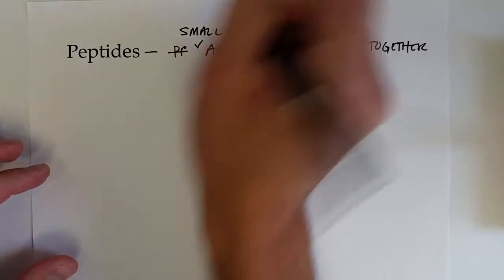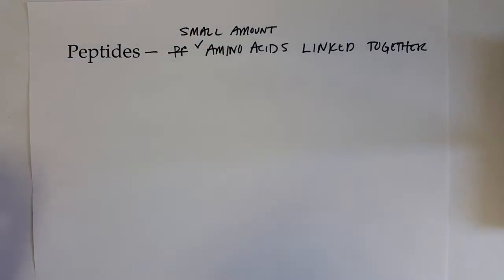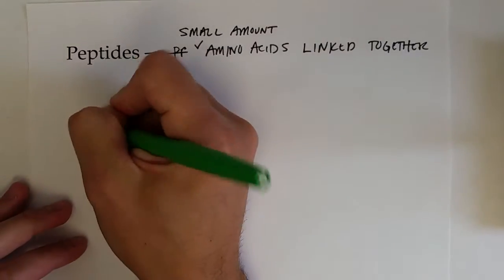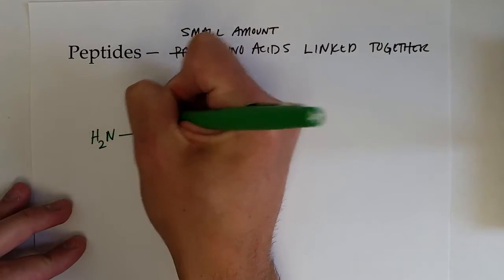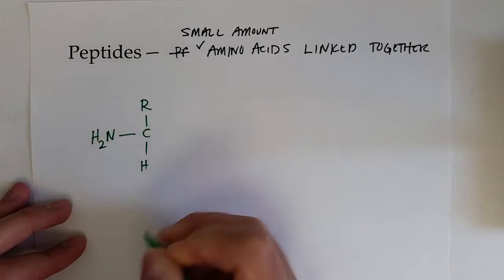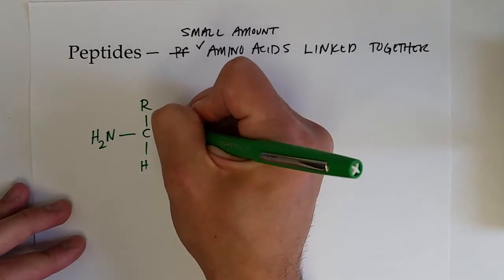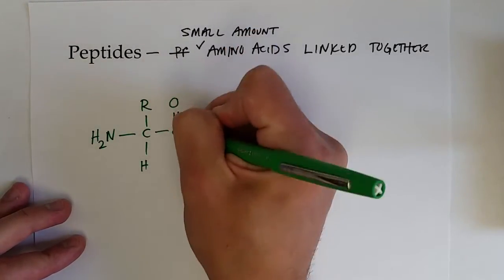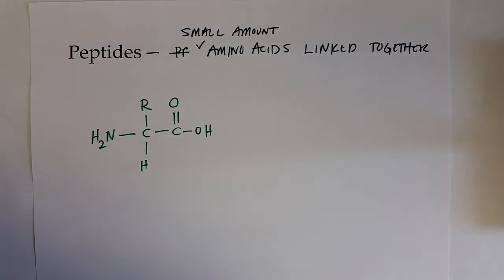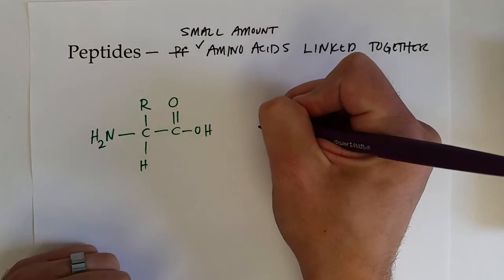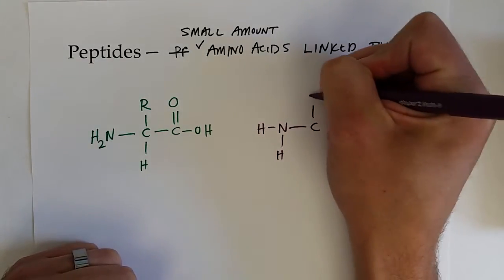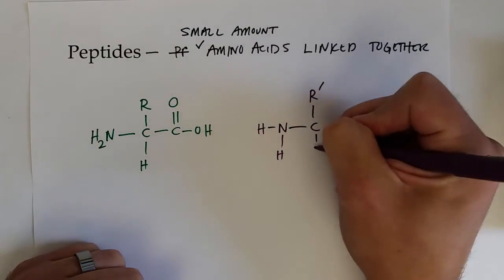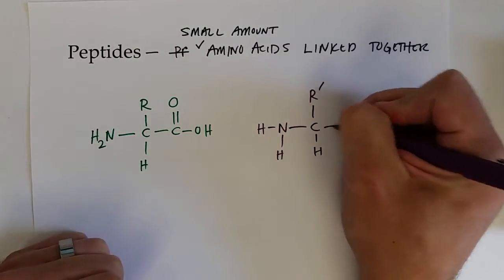Anywhere from two to say a hundred would be considered a peptide. So how do amino acids link up? Let's have one amino acid here, and it could be any amino acid. We'll use the R group designation and then we've got the carboxylic acid group, and it might link up with another amino acid. So we've got the amine group. We'll call this a different amino acid, so we'll call it R prime to indicate that it could be the same amino acid or it could be different, and we've got the carboxylic acid.